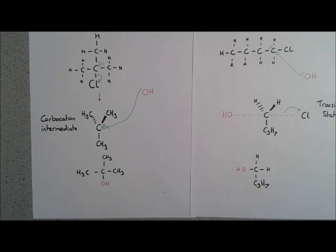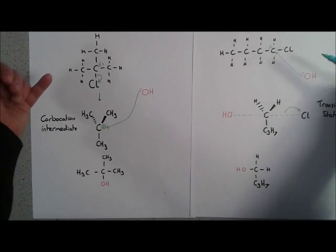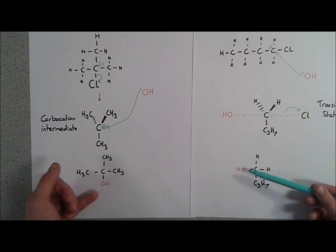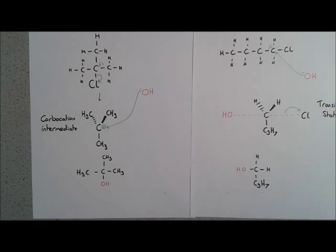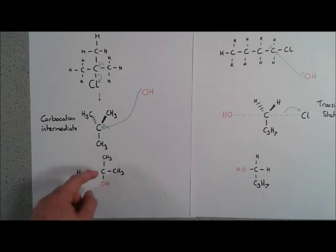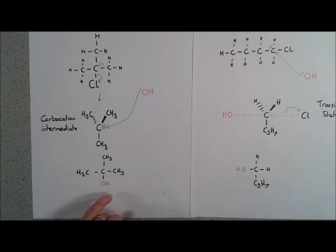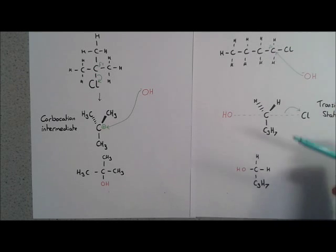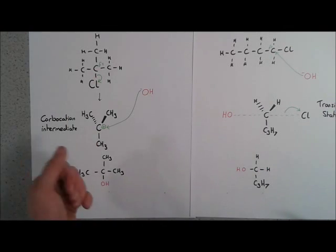The final products are very similar in that they have both simply exchanged a chlorine for the OH through attack from a nucleophile. With this one, you've got a tertiary alcohol with carbons on the carbon with the OH. Here we've got a primary. If you start with primary, you end up with primary. If you start with tertiary, you end up with tertiary.